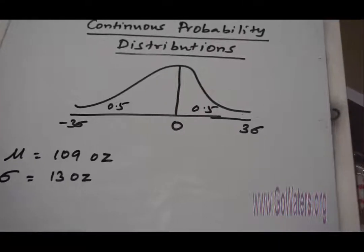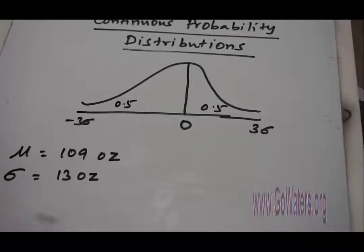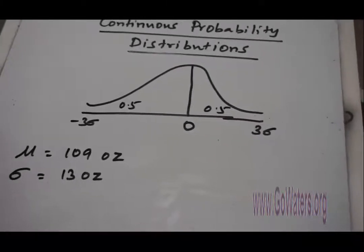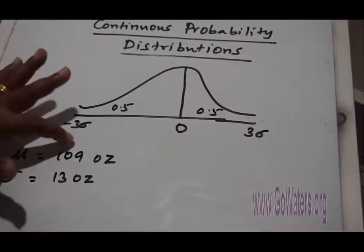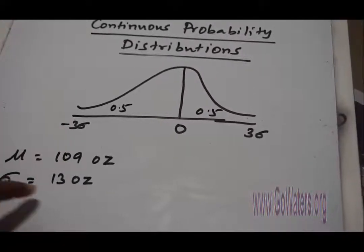So you have a scenario where the birth weight of babies follows a normal distribution with mean 109 ounces and standard deviation 13 ounces.